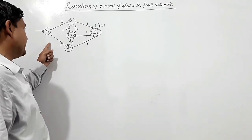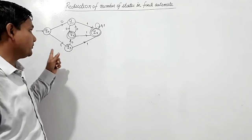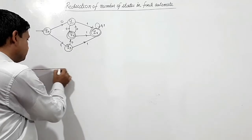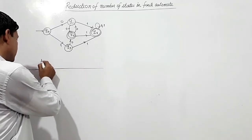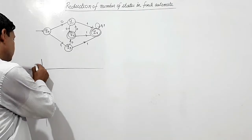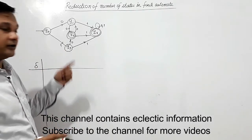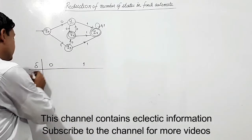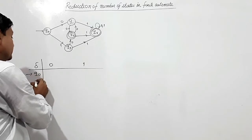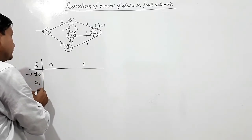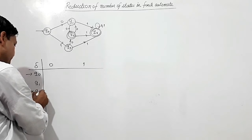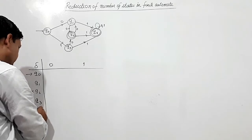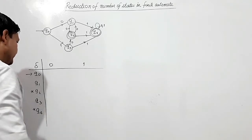We have to minimize this DFA. First of all we shall write its transition table. Symbols used here are 0 and 1 and states: Q0 is the initial state, Q1 is a non-final state, Q2 is the final state, Q3 is a non-final state, and Q4 is the final state.